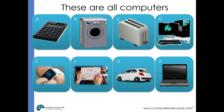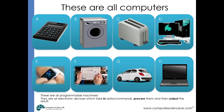All of these devices — the calculator, washing machine, and toaster — actually follow the definitions of a computational device. They are all programmable machines, and they are all electronic devices which take in data, process it, and produce different results. Hopefully we now have a better understanding of what a computer is.